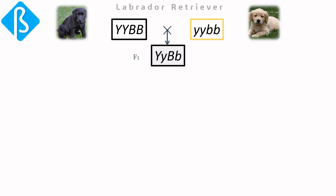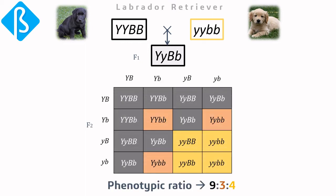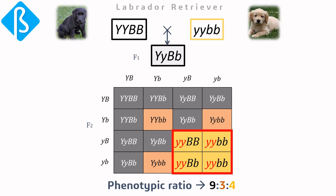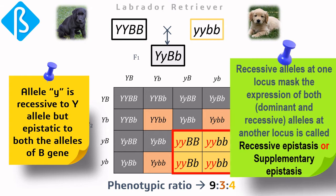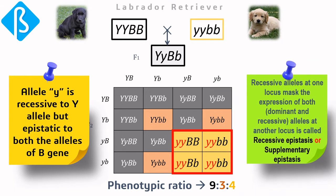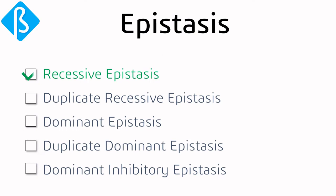In the case of a recessive y allele, absence of the receptor leads to yellow coat color. If we cross homozygous black with homozygous yellow dogs and allow self-fertilization of heterozygous black F1 generation, we observe a phenotypic ratio of 9:3:4 in the F2 generation, deviated from the normal 9:3:3:1 ratio. The four yellow progenies are homozygous for the recessive y allele — y is recessive to Y but epistatic to both alleles of the B gene. This is called recessive epistasis or supplementary epistasis.